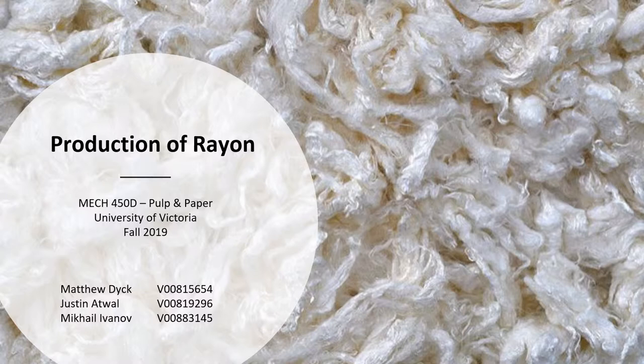Rayon is a natural-based material that is manufactured from the regenerated cellulose of wood pulp, cotton, or practically any other source of cellulose, and even protein. Being distinguished as the oldest manufactured fiber, it was developed as a silk alternative in France during the 1880s.